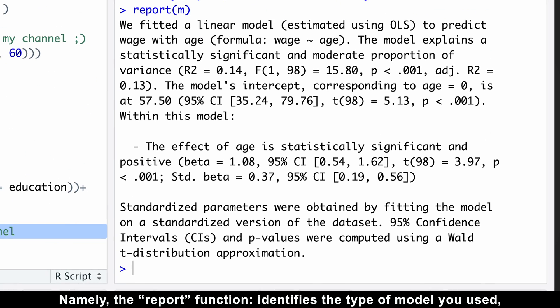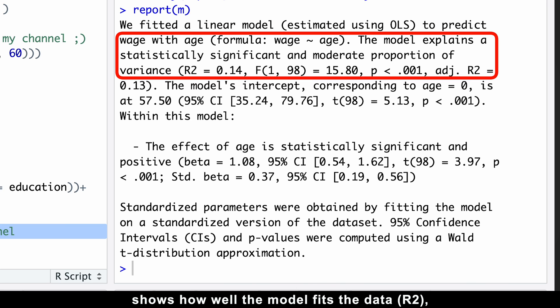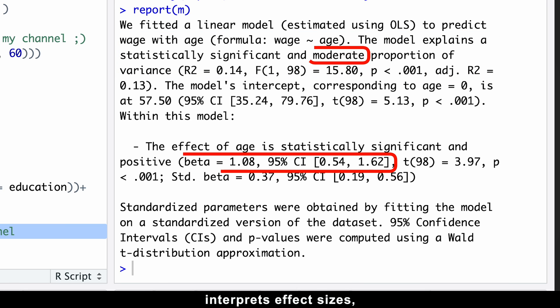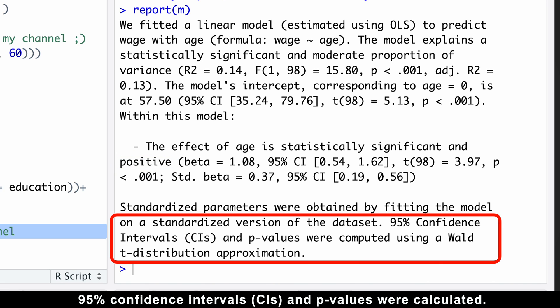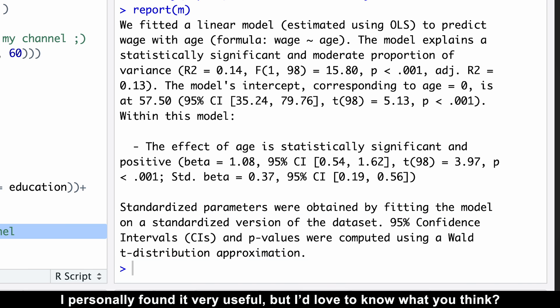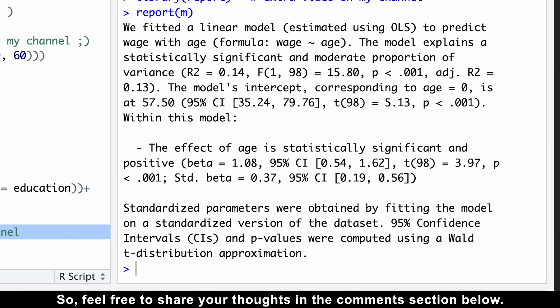Namely, the report function identifies the type of model you used, shows how well the model fits the data, interprets effect sizes, describes where the predictors are significant and which direction the slopes go, and even reports how 95% confidence intervals and p-values were calculated. I personally found it very useful, but I'd love to know what you think, so feel free to share your thoughts in the comment section below.